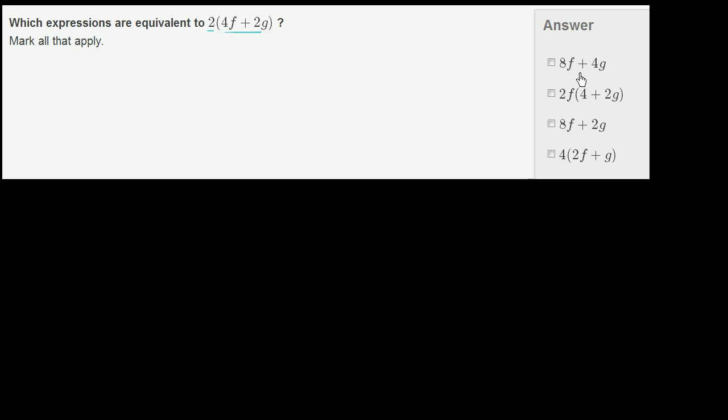So the first one here is 8f plus 4g. Could I manipulate this somehow in a valid way so I get 8f plus 4g?